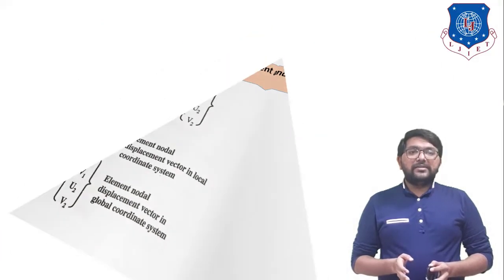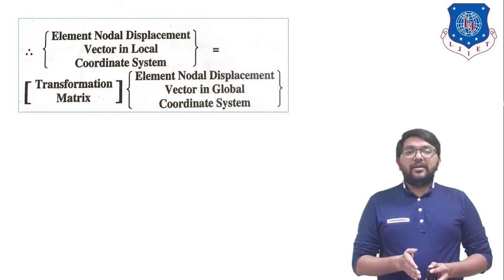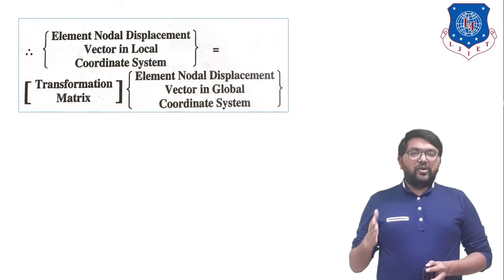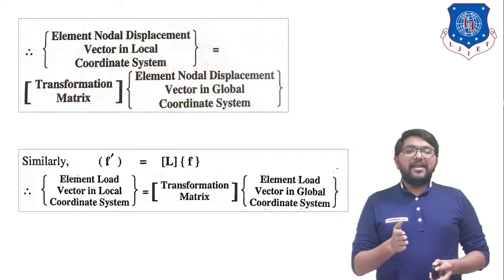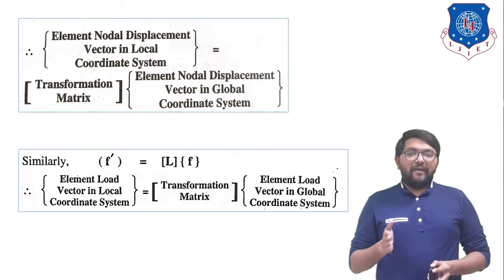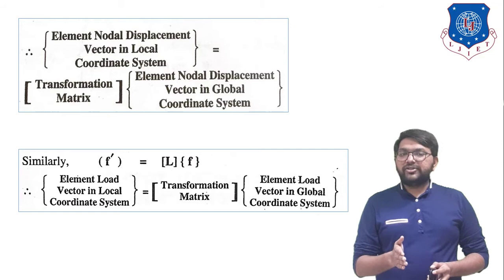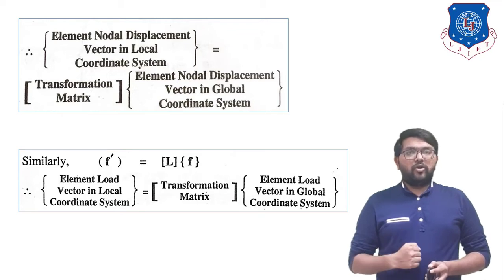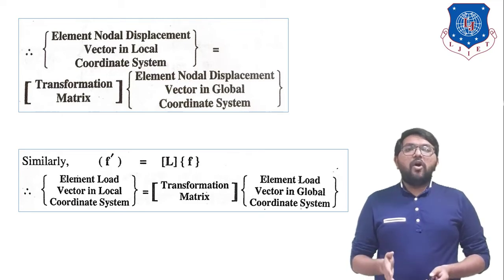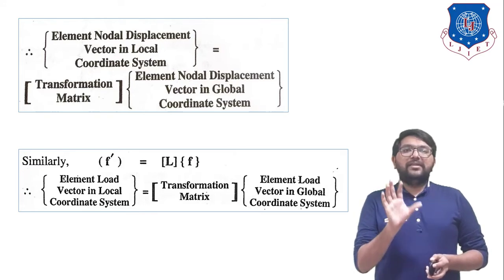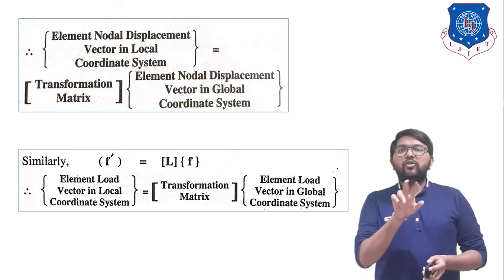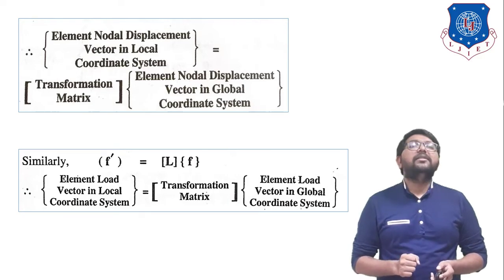The element nodal displacement vector in local coordinate system is equal to the transformation matrix times the element nodal displacement vector in global coordinate system, i.e., UN' = L·UN. Similarly, f' = L·f, where f' is the element load vector in local coordinate system, L is the transformation matrix, and f is the element load vector in global coordinate system.